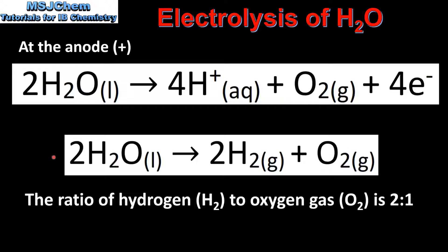Here we have the overall equation for the reaction. The electrolysis of water produces two gases: hydrogen and oxygen. As we can see from the balanced equation, the ratio of hydrogen gas to oxygen gas is 2 to 1, meaning we have twice the volume of hydrogen gas produced when compared to oxygen.